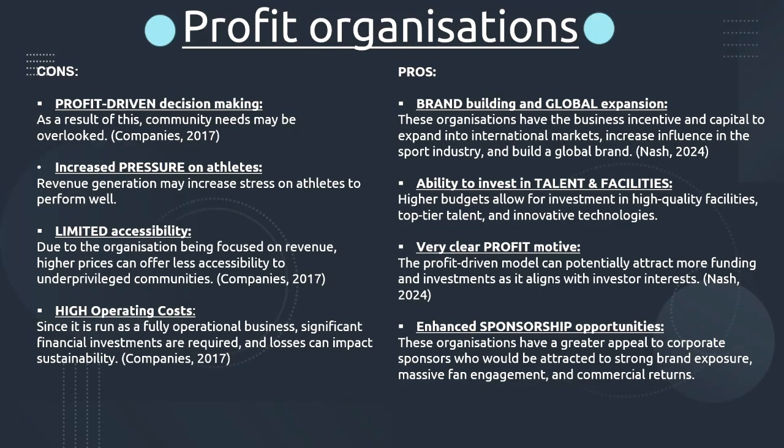In this slide we are specifically going to look at for-profit organisations and the pros and cons thereof. On the left, looking at the cons, we have profit-driven decision making — this means that community needs may be overlooked so the organisation can ensure it is making profit. There is increased pressure on athletes, as they are expected to perform to bring in revenue. There is limited accessibility, because the focus on revenue means higher prices offer less accessibility to underprivileged communities. High operating costs also apply, since significant financial investments are required and losses can impact sustainability.